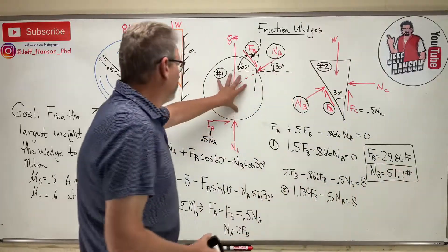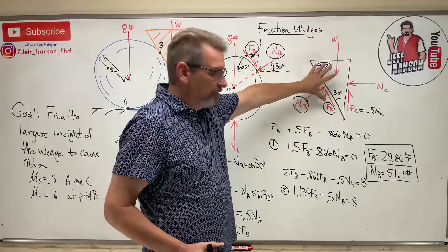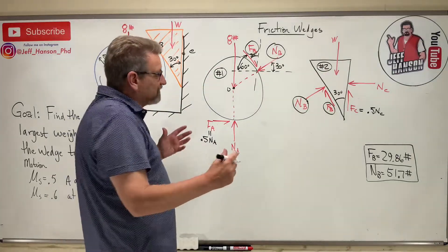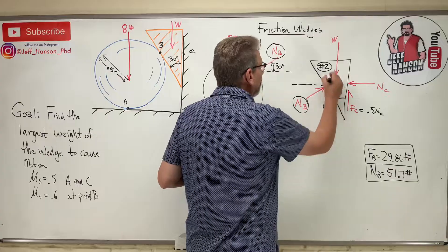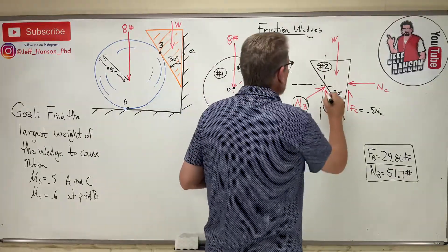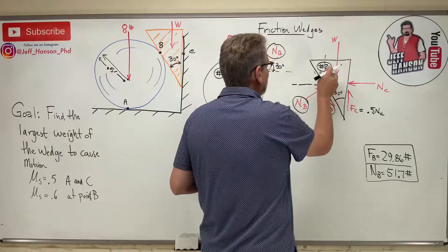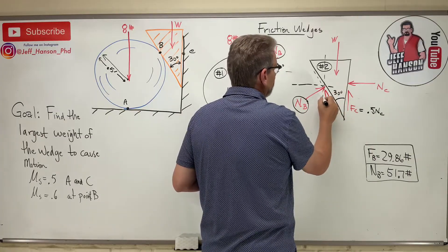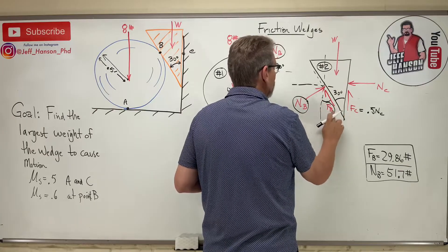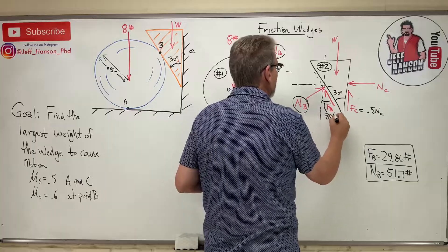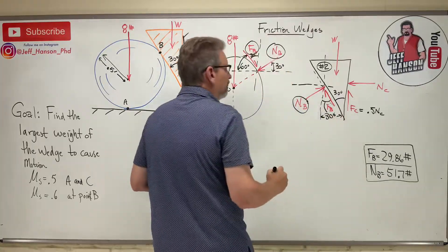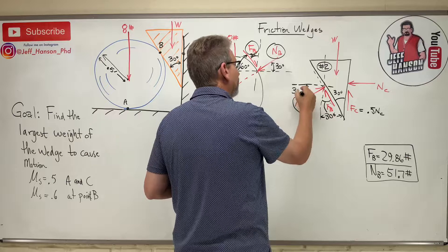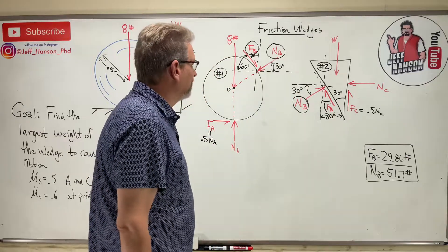We've solved free body one to get the information we need for free body two. Let me draw a couple of construction lines on the wedge diagram. If the wedge angle is 30 degrees, then this angle here is 30, making this one 60, and this over here is also 30 degrees. Work your angles around carefully and make sure you have it correct.